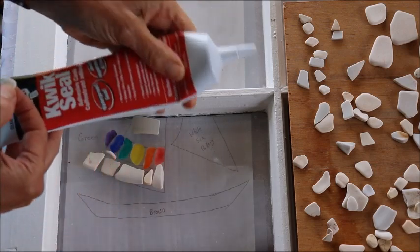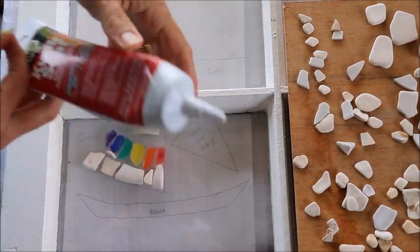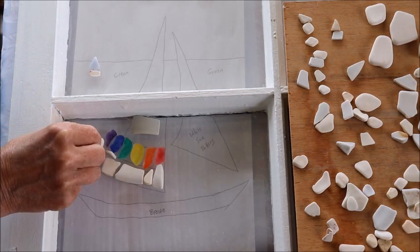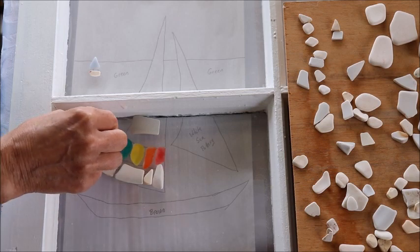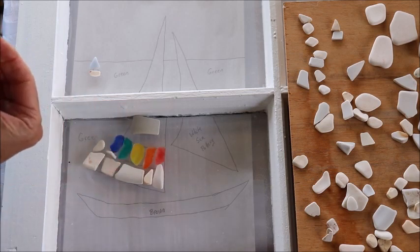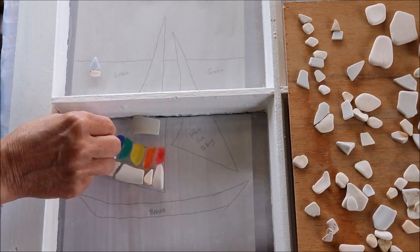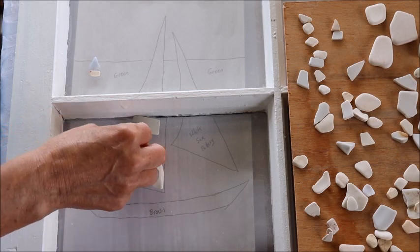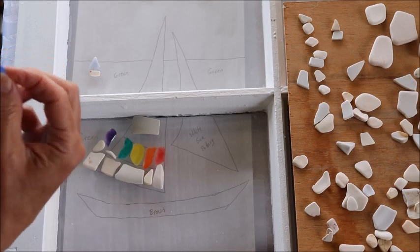And remember when you're using the quick seal adhesive caulk it takes quite a long time to dry. So it's going to give me time to shift things around and make sure they line up just right. Now you might notice I am leaving a little bit of space around each piece of seaglass. I don't like my pieces of seaglass touching.